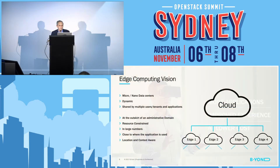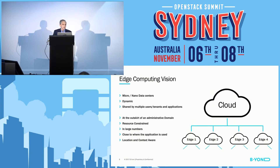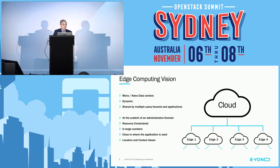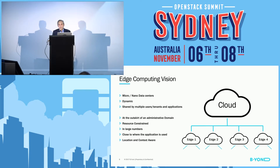What is edge computing? What's the definition? Edge computing is not really different from cloud computing — there are lots of similarities. We're talking about data centers, reusing the tools that have been successful in the cloud and using them at the edge. It's a dynamic environment shared by multiple tenants and multiple applications. It's similar, but different from the cloud at the same time.